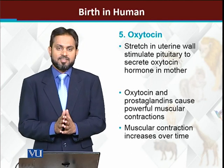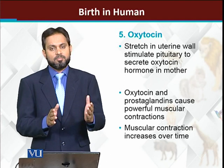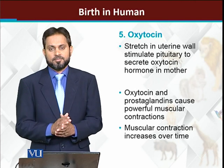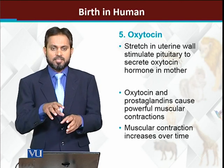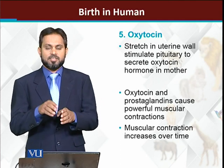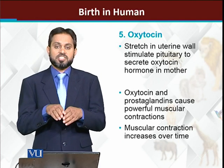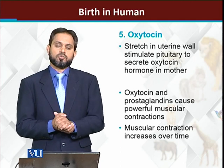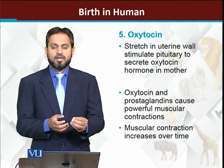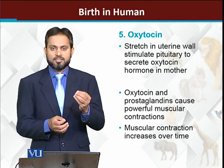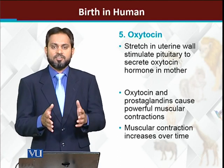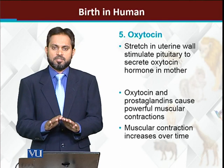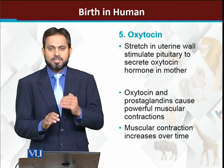Oxytocin hormone is the other important hormone, released by the mother. When the fetus is in the uterus, its pressure creates stretch on the uterus walls. جس کے وجہ سے mother کا pituitary gland oxytocin hormone secrete کرتا ہے۔ This oxytocin, in combination with prostaglandins, gives powerful contractions to the uterine walls.